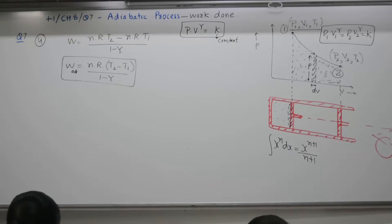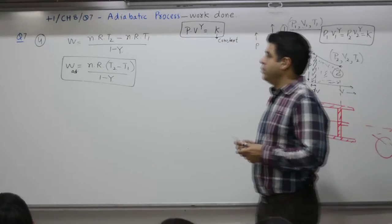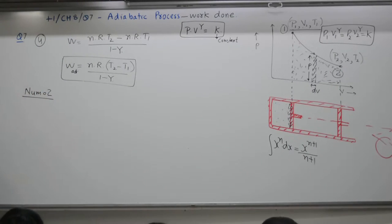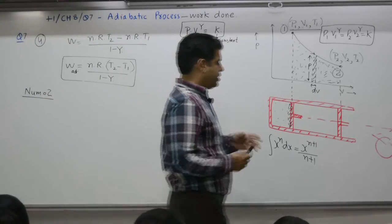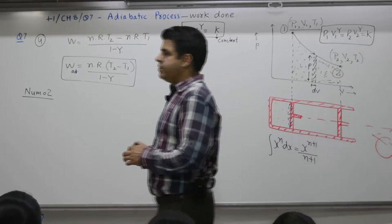Numerical number 2: A cylinder containing 1 gram mole of a gas was put on boiling water bath and compressed adiabatically till its temperature rose by 70 degrees C. Calculate the work done and heat developed in the gas. Gamma is 1.5, R is 2 calorie per mole per kelvin. It is compression. Work done will be positive or negative? Negative.